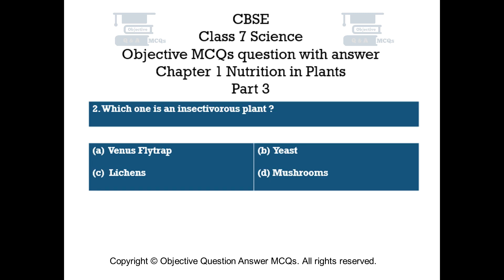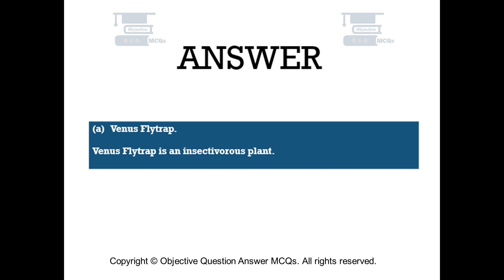Question number 2. Which one is an insectivorous plant? Option A: Venus flytrap. Option B: Yeast. Option C: Lichens. Option D: Mushrooms. The right answer is option A: Venus flytrap. Venus flytrap is an insectivorous plant.